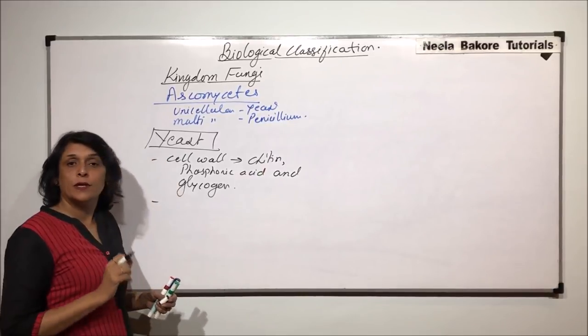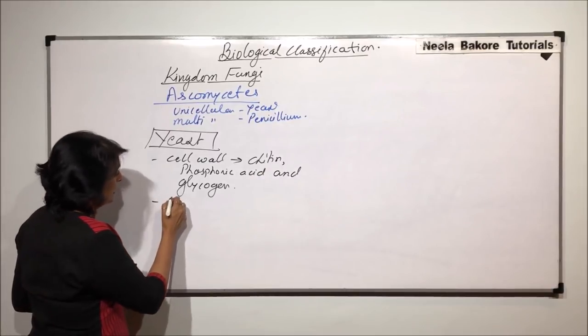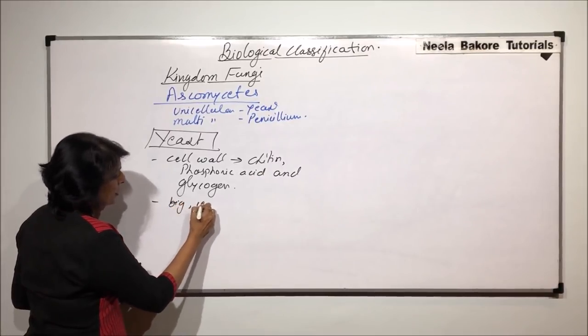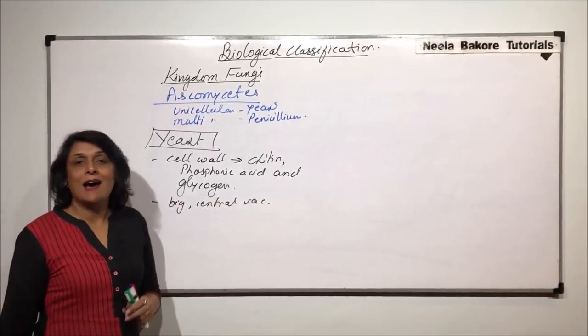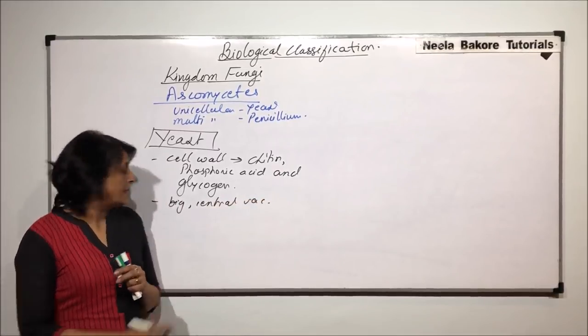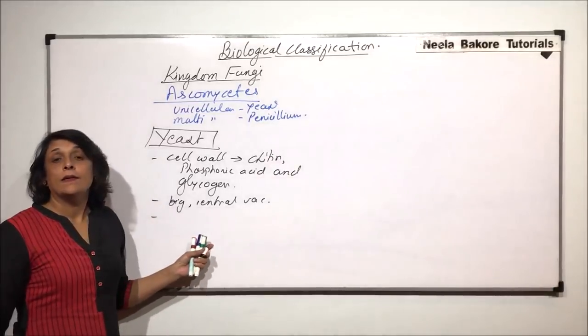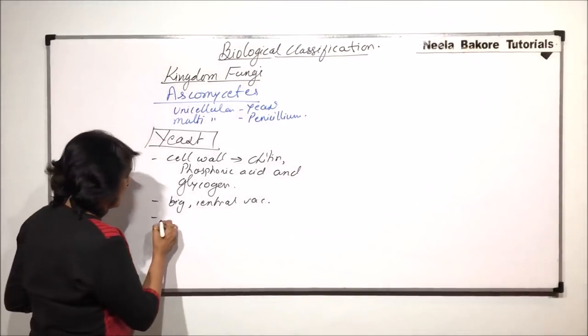Then, there is one more very important and special thing. There is a big central vacuole. So, this vacuole is large and is centrally placed. Now, yeast, they are saprophytes. Fungi are saprophytes.